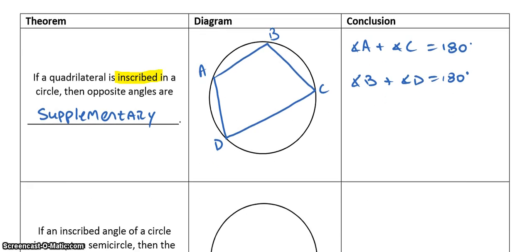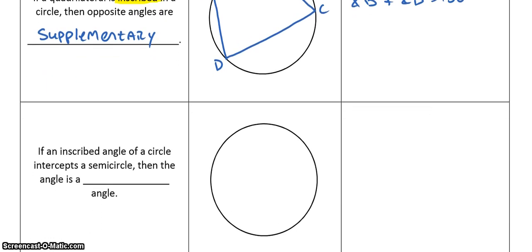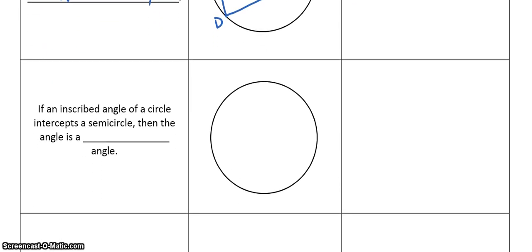Alright? Now, along with this kind of comes another theorem. And, it's if an inscribed angle, again, there's that word inscribed. If an inscribed angle of a circle intercepts a semicircle, then the angle is a right angle. Okay? Now, this is just one of those theorems that, let's say we have a diameter. Okay? And, if I have an angle on the circle, that happens to intercept that diameter.